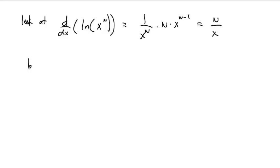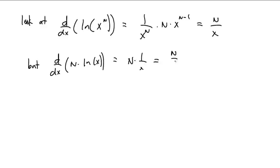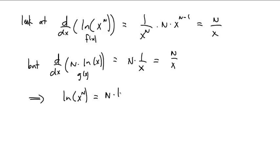Now let's look at the derivative of n times the natural log of x. If n is a constant, you put the constant out front; the derivative of ln(x) is 1/x. That is also n over x. So we have two things — think of ln(x^n) as your f(x) and n·ln(x) as your g(x). Their derivatives are the same. That theorem says that ln(x^n) is the same thing as n·ln(x) plus some constant.